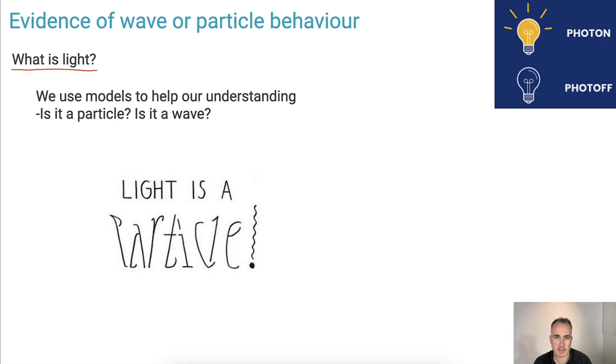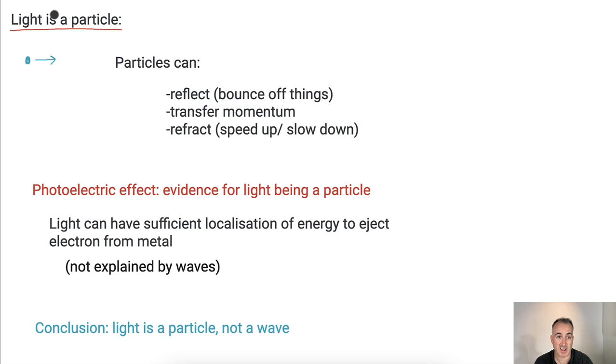So first of all, let's keep going. Let's look at light is a particle. Why would that be? So that means it's like there's some discrete little ball of something bouncing off stuff, doing stuff. So what can particles actually do? Well, particles can reflect. You know, something bounces off a wall. It goes bouncing, it bounces off. Particles can reflect.